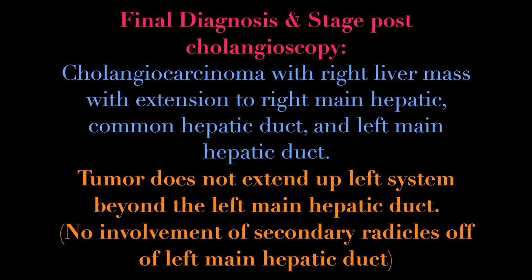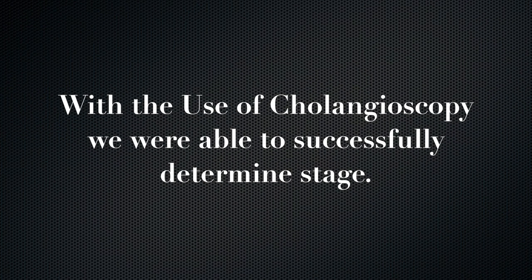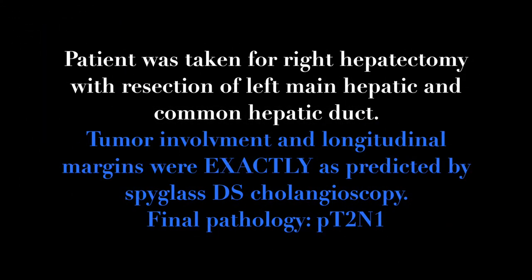Final diagnosis and staging post-cholangioscopy shows a cholangiocarcinoma with a right liver mass extending to the right main hepatic duct, common hepatic duct, and left main hepatic duct. There was resectability of the tumor in terms of vascular involvement on CT scan, and no involvement of the secondary radicals. With use of cholangioscopy, we were able to successfully determine the stage and longitudinal extent of the tumor. The patient proceeded with a right hepatectomy along with resection of the right and left main and common hepatic bile ducts and hepatico-jejunostomy to the left system.